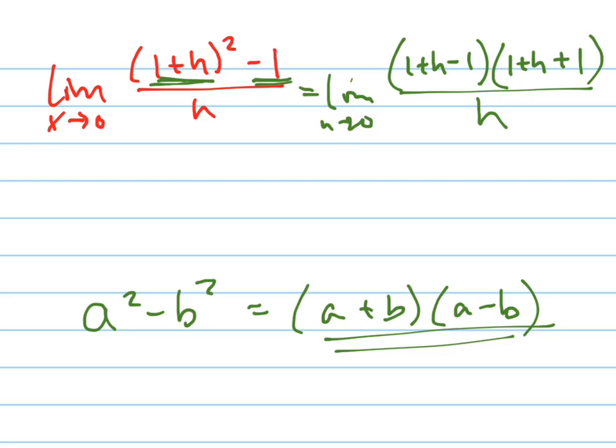All over h. When I do that, you'll notice that nice things start to happen. This cancels out, and I just get h. This turns into h plus 2, all over h.